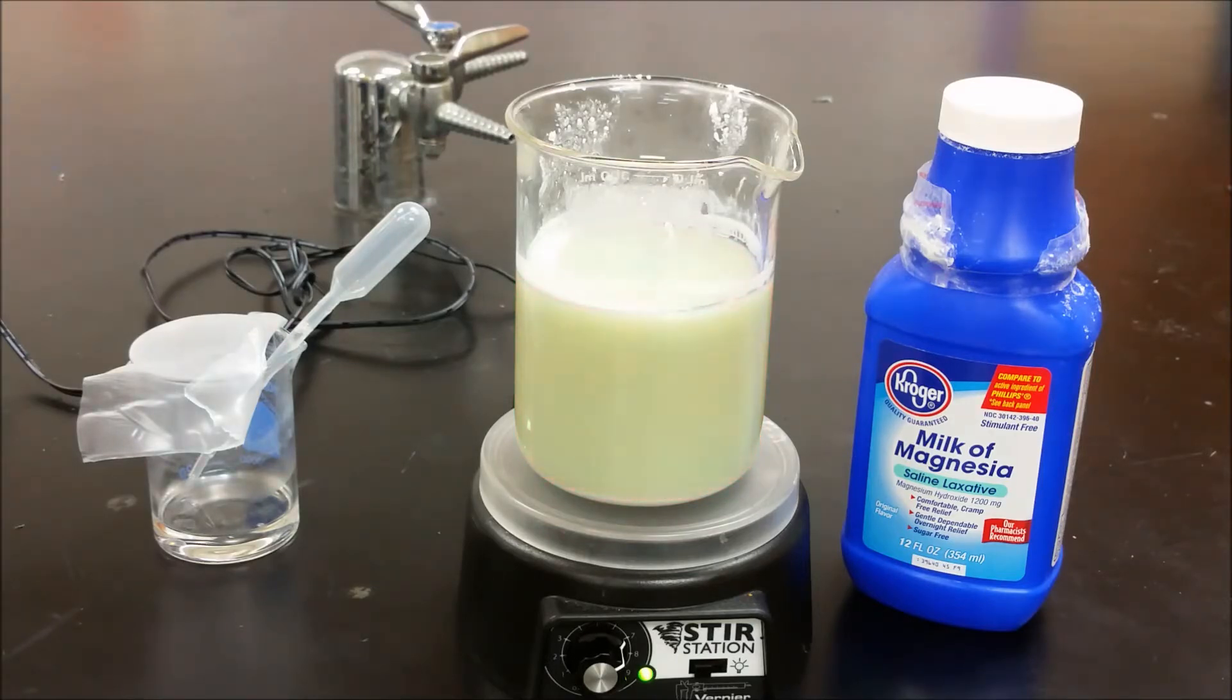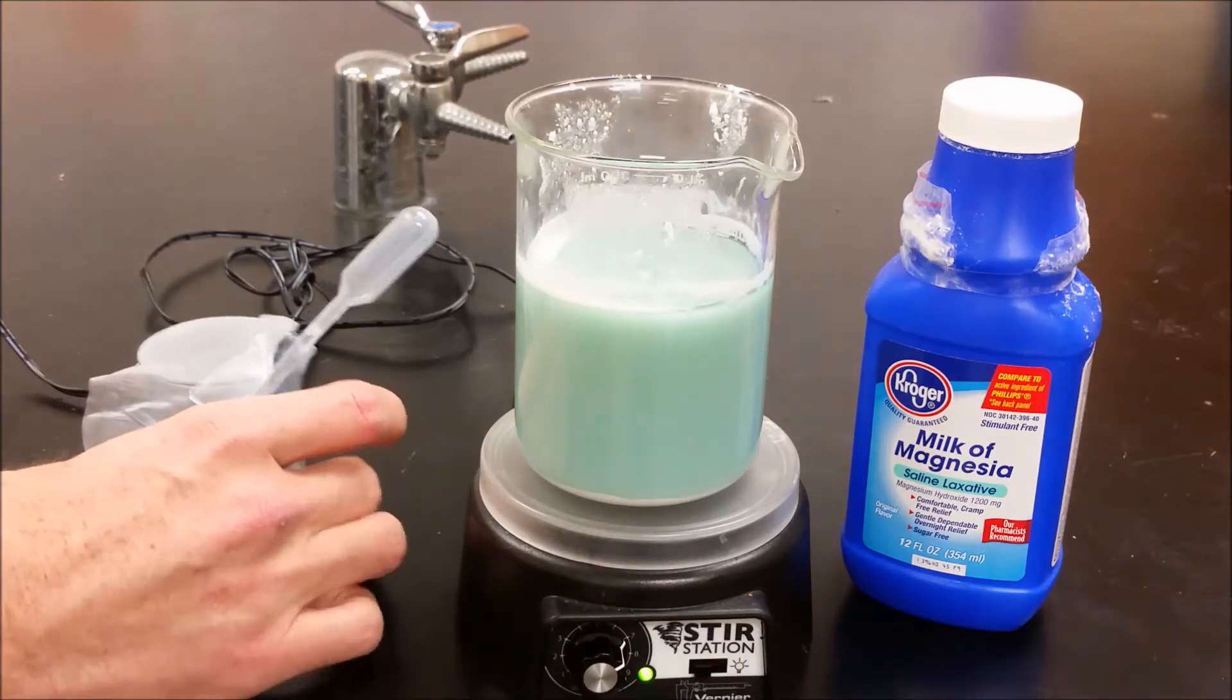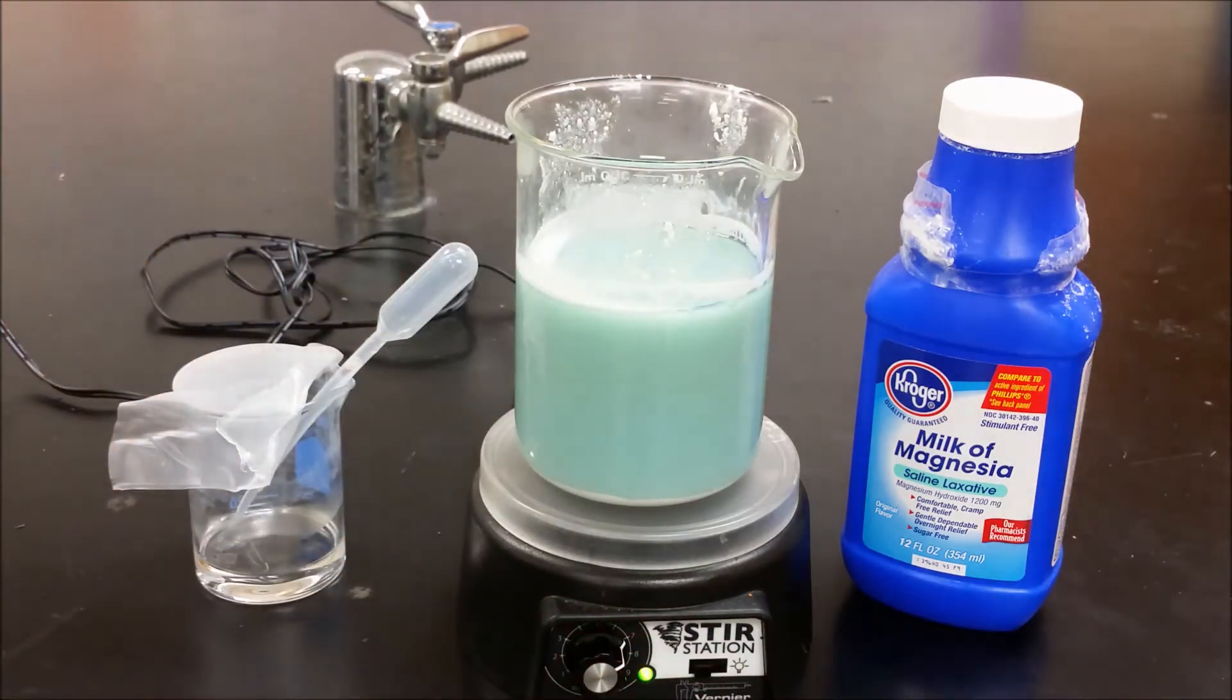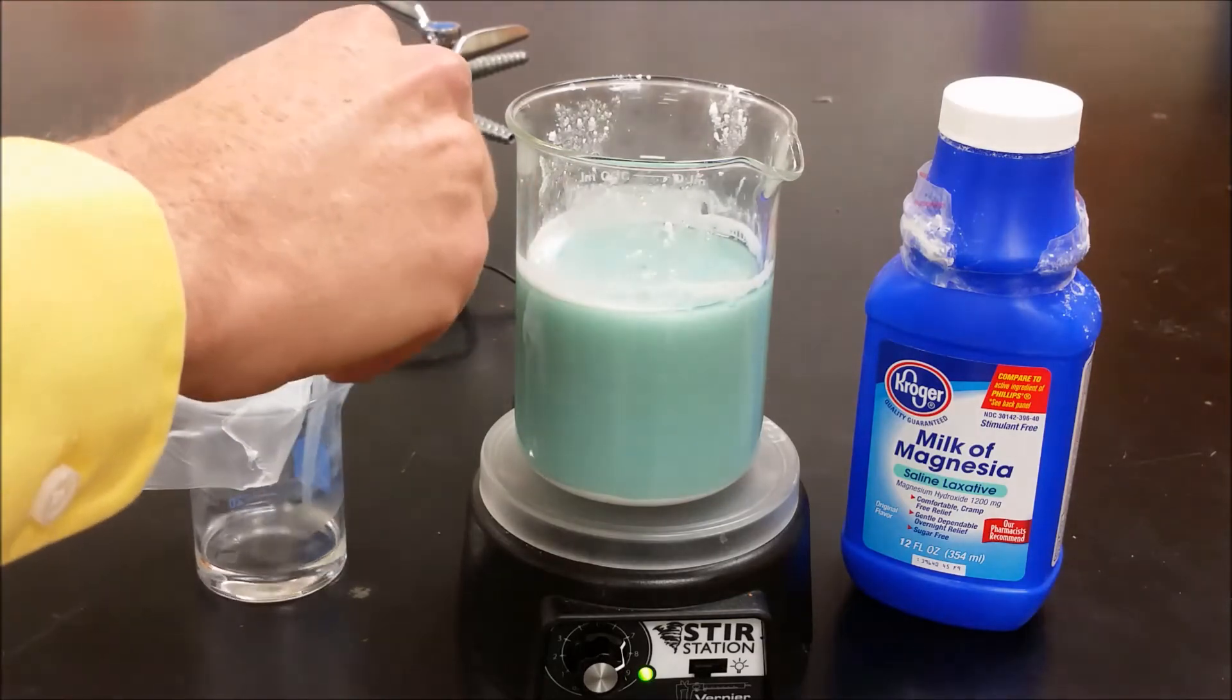As the milk of magnesia reacts with the hydrochloric acid, the color will change back. Because of the limited solubility, it takes some time to get back to the purple state.